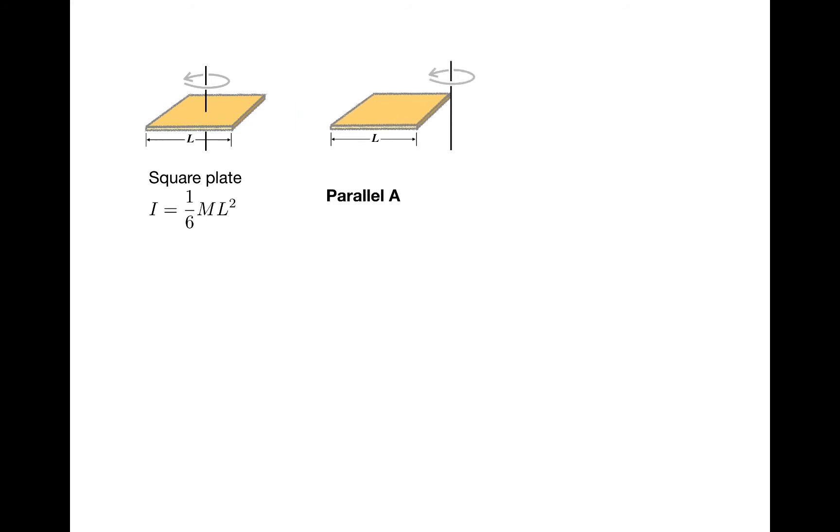In that case, there's a theorem called the parallel axis theorem, that says that the rotational inertia about the other axis is equal to the rotational inertia about an axis through the center of mass plus mr squared, where r is the distance from the center of mass to the new axis of rotation.